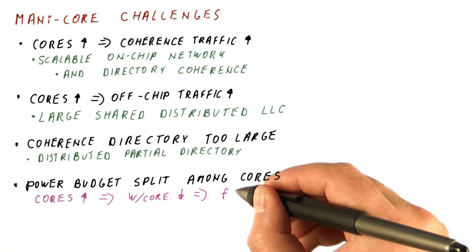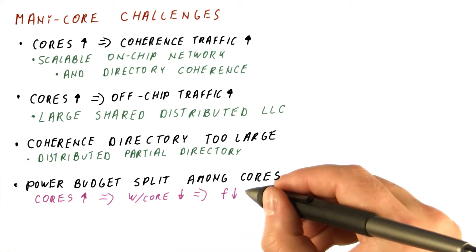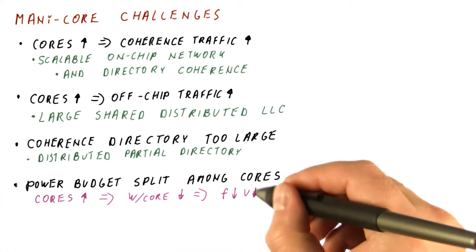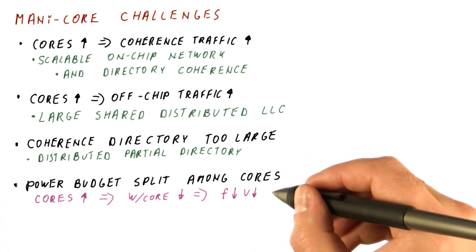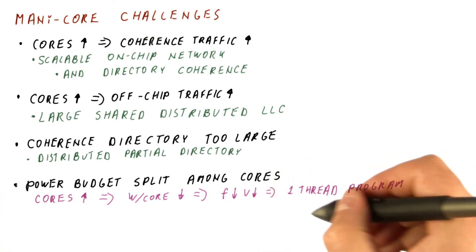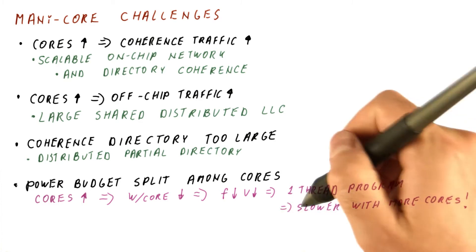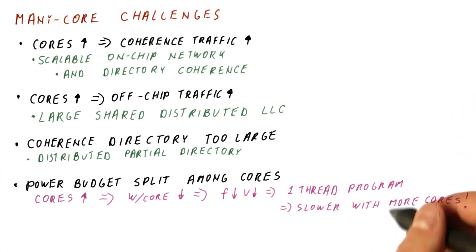And that means that the frequency and the voltage that we can use in each core goes down. And that means that if we have a single-threaded program, it gets slower and slower the more cores we have.